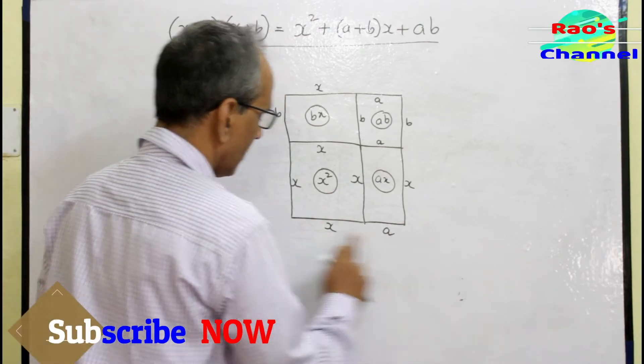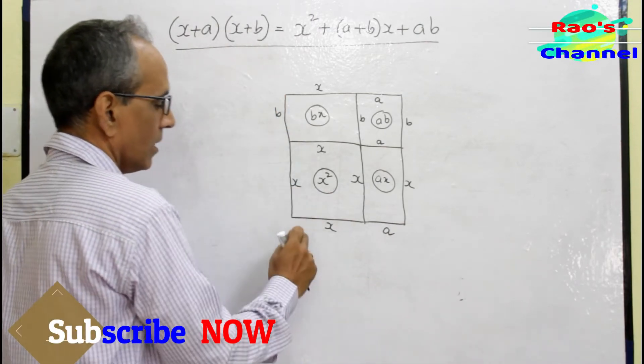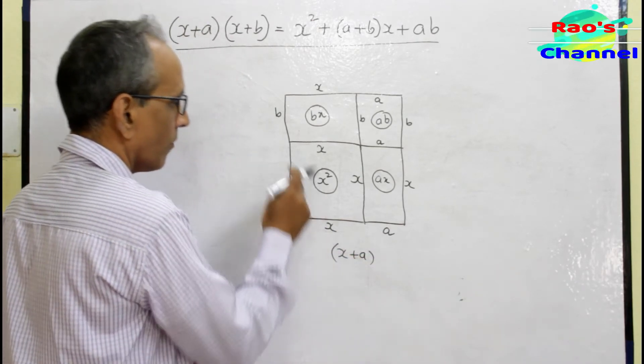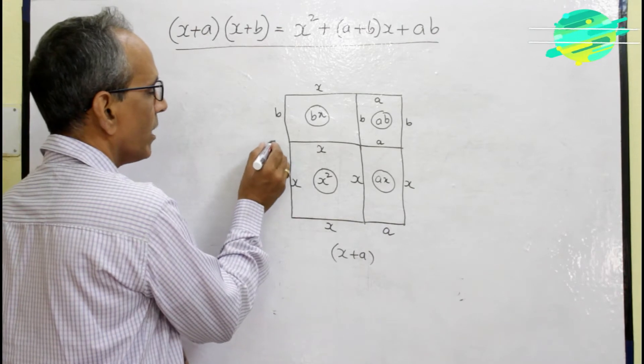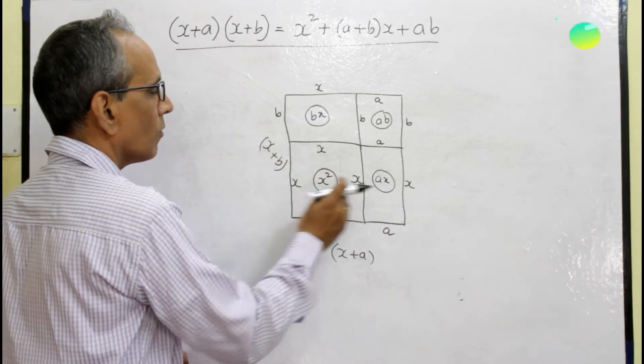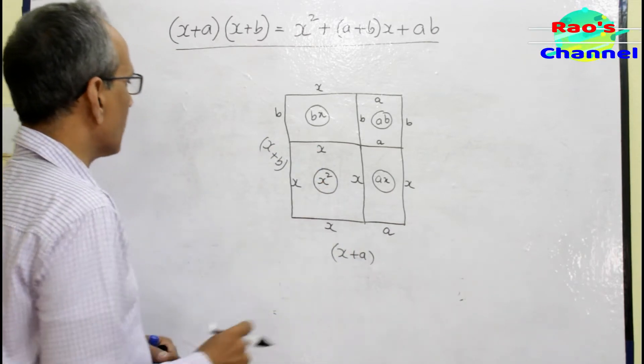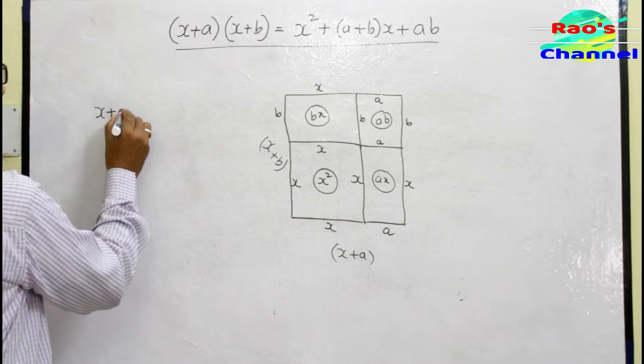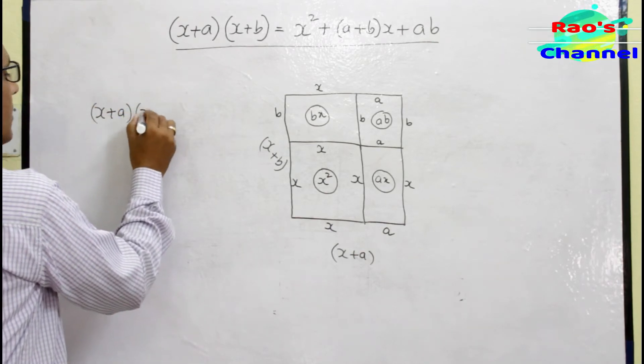This length into this length. This length is x increased by a units, whereas this is increased by b units. The whole four regions' area is the product of these two. When I multiply (x+a)(x+b)...